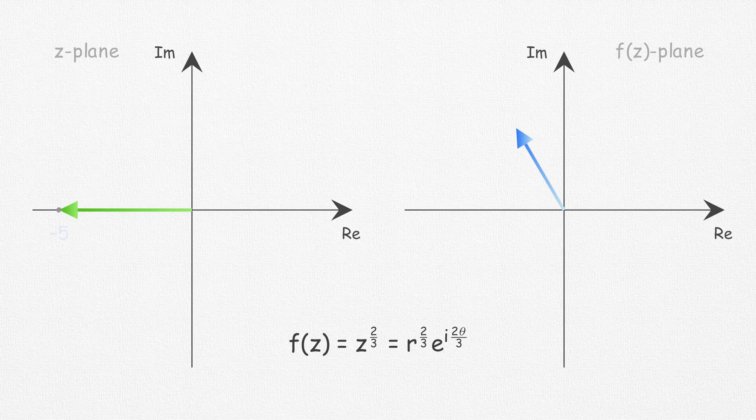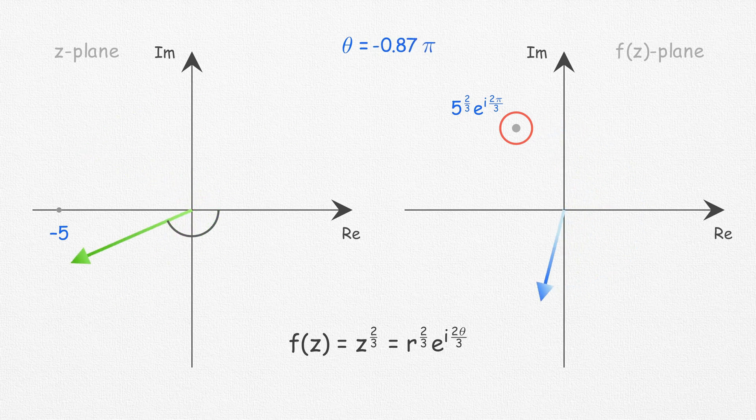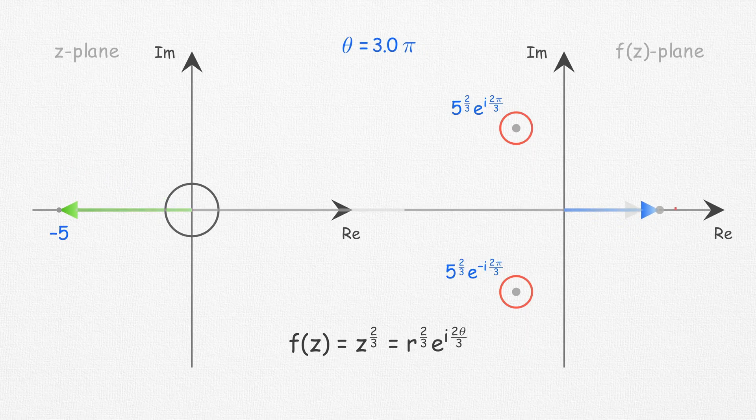Similarly, if we take z to the power 2 by 3, a single point in the z-plane maps to exactly three different points in the f(z)-plane, and as you can see, minus 5 to the power 2 by 3 has actually three values.